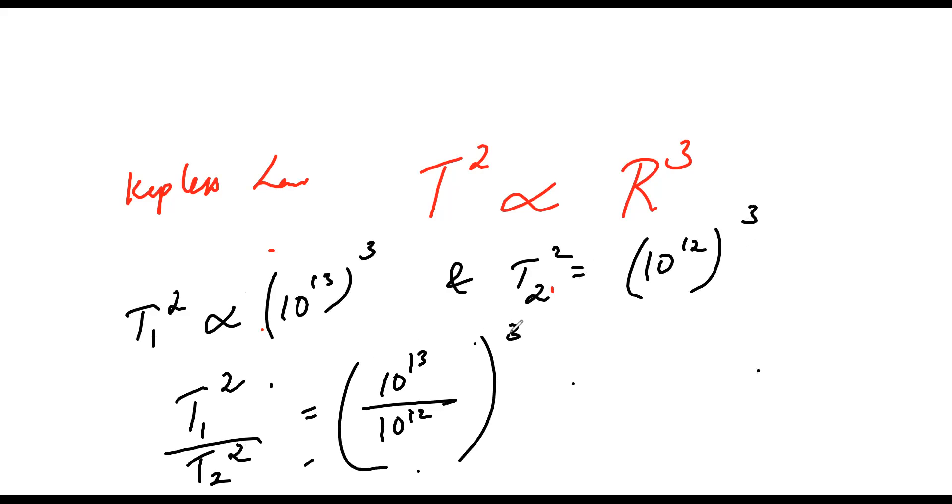So what I will do is 10 power 13 by 10 power 12 the whole cube. Here I can just cancel 10 power 13 and 10 power 12, so it is 10 to the power 1 whole cube, which means 10 cube.